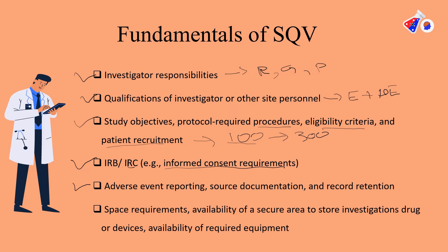Adverse event reporting procedures, source documentation maintenance, and record retention at the site are checked in physical form. Space availability is also checked, as hospitals and research sites have multiple trials running and space is at a premium. The availability of a secure area to store study documentation, source records, and the investigational product (IP) is assessed to ensure integrity and safety of records, along with availability of required equipment.